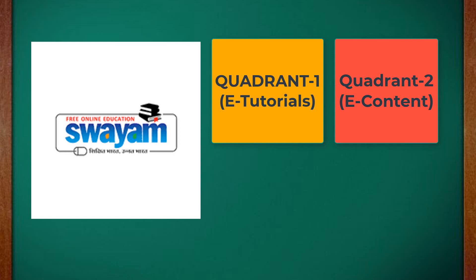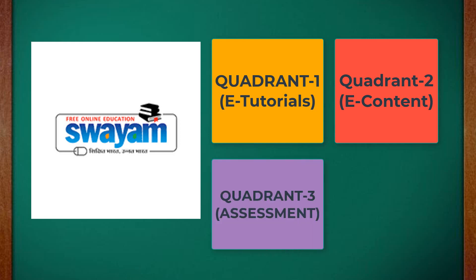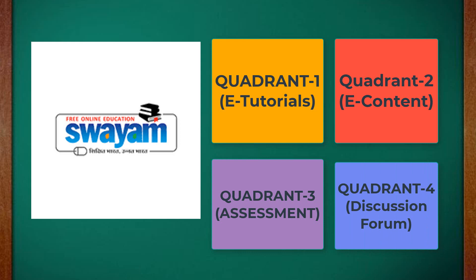The reading material is provided in a printed form or digital form. The third quadrant is Assessment — test and quizzes are being conducted for self-assessment. The fourth quadrant is Discussion Forum: after watching the video lecture, reading the material, and taking a test, if you still have doubts, there is a discussion forum platform where you can clear any doubts through online discussion. So the four quadrants are: E-Tutorial, E-Content, Assessment Test, and Discussion Forum.